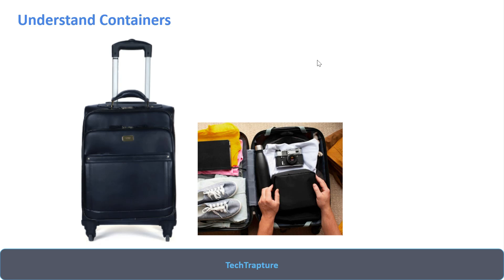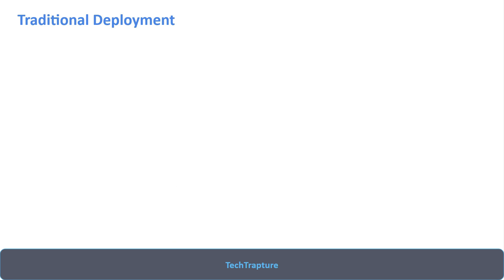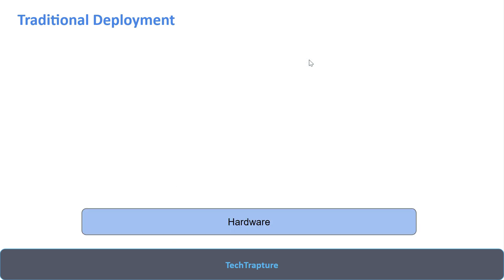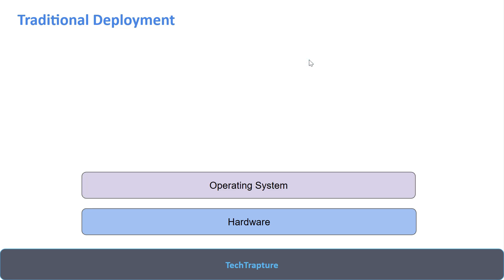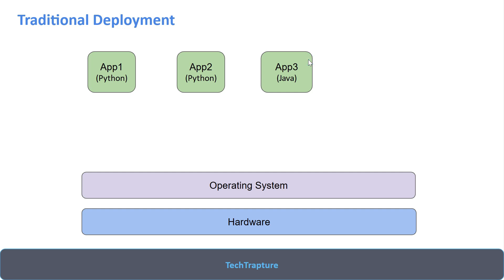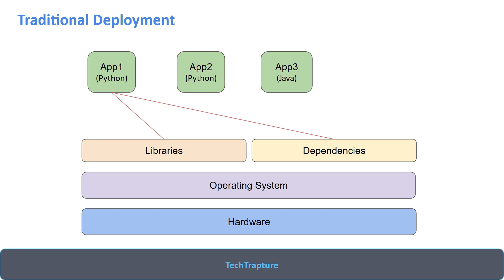Let's understand containers in technical terms. In the traditional deployment approach, you have hardware, an operating system, and applications deployed on a server. For example, Application 1 is a Python Flask application with its own Python and Flask libraries. Application 2 is a data processing application needing NumPy, pandas, or machine learning libraries. Application 3 is a Java application — each with different requirements and dependencies.